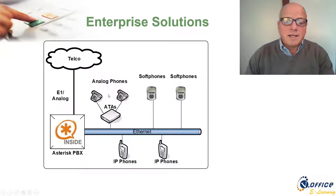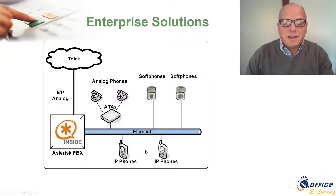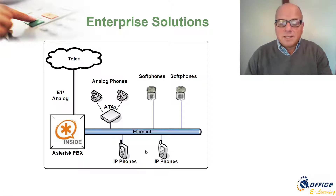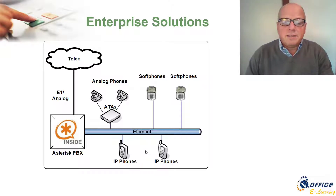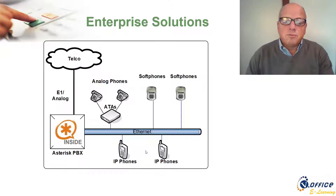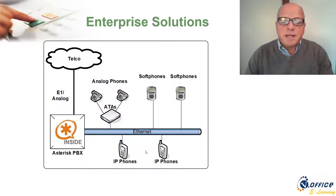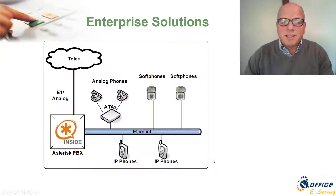With a SIP trunk, you can connect analog phones using ATAs, softphones, and IP phones — giving you a very cheap PBX. A startup can have an Asterisk PBX connected to an internet telephony service provider, using IP phones or softphones on mobile. There are very good companies providing SIP clients for mobile phones, and a startup can look like a very large company just by using Asterisk without investing almost anything.